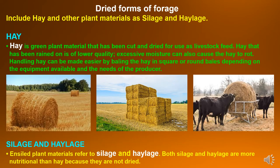Dried forms of forage include hay and other plant materials as silage and haylage. Hay is green plant material that has been cut and dried for use as livestock feed. Hay that has been rained on is of lower quality. Excessive moisture can also cause the hay to rot. Handling hay can be made easier by baling in square or round bales depending on the equipment available and the needs of the producer.